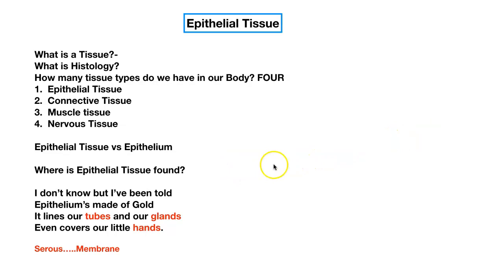What are other tubes carrying stuff in and out of your body? When you breathe, air travels from your nose all the way to the lungs where gas exchange occurs — all those tubes carrying air to the lungs are lined with epithelial tissue. The tube where you urinate from is lined with epithelial tissue. Blood vessels are also tubes, so remember: every tube in your body is lined with epithelial tissue.